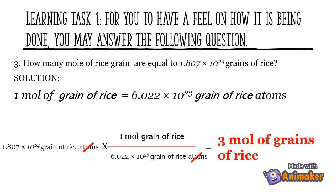Number 3: how many moles of rice grains are equal to 1.807 × 10²⁴ grains? Remember, 1 mole of grains of rice is equal to 6.022 × 10²³ grains of rice. Answer: 3 moles of grains of rice.